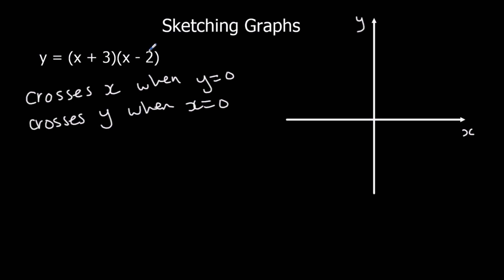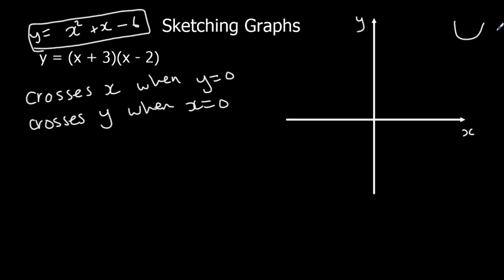This graph here is a quadratic graph. If we expand it, we'll get x squared minus 2x plus 3x, so plus 1x minus 6. It's a quadratic graph, and it's positive — the x squared is positive — so it's going to make a U-shape, a parabola. Some people say a smiley face. So we're going to have this kind of shape, and then we work out where it crosses the x-axis, and that's all we need for a sketch.